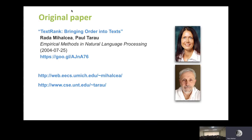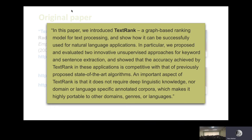That brings us to the person who really thought this out and proposed this — Rada Mihalcea and also her graduate advisor Paul Tarau. They did the paper TextRank: Bringing Order into Text, that was in 2004, when Rada was a graduate student. A friend of mine was one of her research partners. I found out about this paper about two years later. I've got links currently both to Paul Tarau at UNT, as well as Rada, who is now a professor in computer science at University of Michigan. TextRank really struck me when I first read it — it just really resonated.